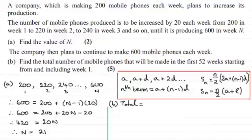So we're looking then to work out the sum of the first 21 weeks. But then we've got to be careful here, because we've got the 22nd week, which we're going to produce 600 mobile phones.